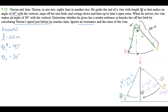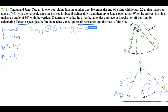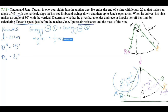Our unknown is Tarzan's speed right before he reaches Jane. Because energy is conserved — we're ignoring air resistance — energy at position one equals energy at position three. At position one the energy is just gravitational potential energy: mgh₁. At position three, there's kinetic energy one-half mv² plus gravitational potential energy mgh₂, since he's at a different height.